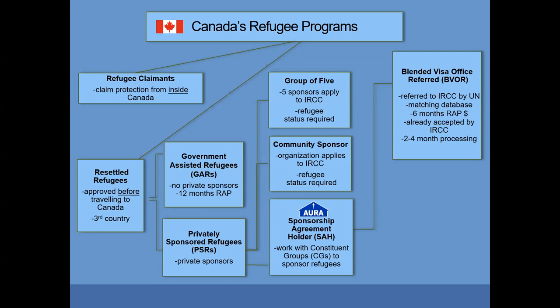Usually two to four months. BVORs receive six months of financial support through the Resettlement Assistance Program, or the RAP program — that's the same program that Government Assisted Refugees receive support from for the full 12 months.